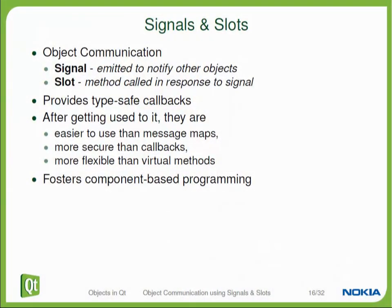Events will be covered in a later video. In this video, we will focus on signals and slots. When we are talking about signals and slots, we are always talking about communication between an explicit sender and an explicit receiver. The sender sends the signal and the receiver provides a slot in which the signal is received. Effectively, what we are implementing with that are type-safe callbacks.